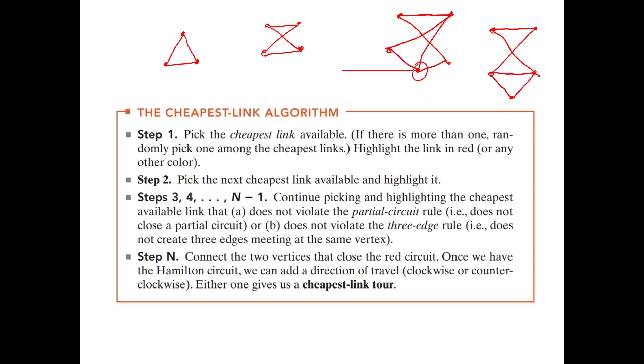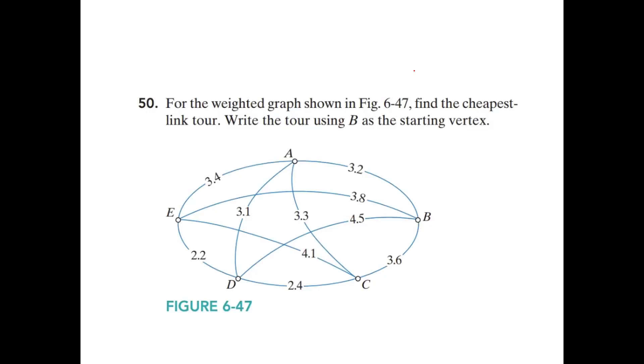So let's practice that. Okay, so I will walk you through step by step on this. So for the weighted graph shown in figure 647, find the cheapest link tour, right? The tour using B as the starting vertex.